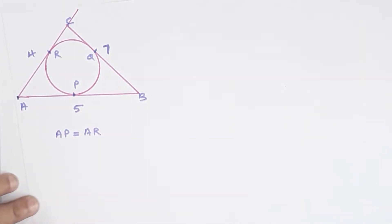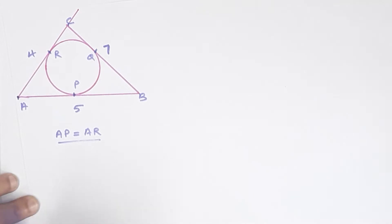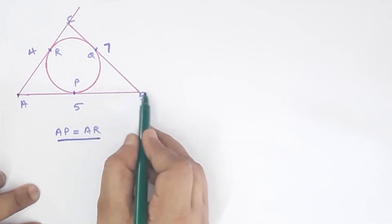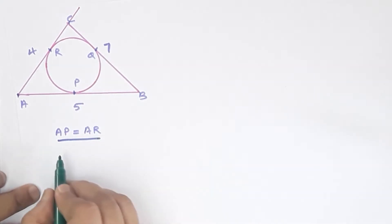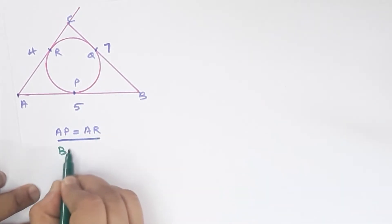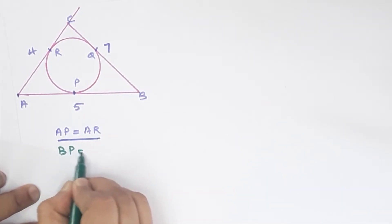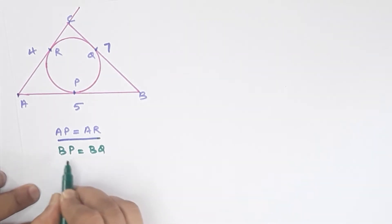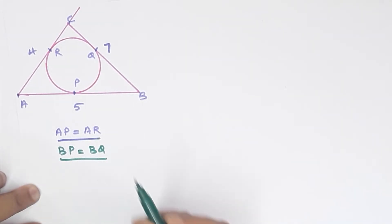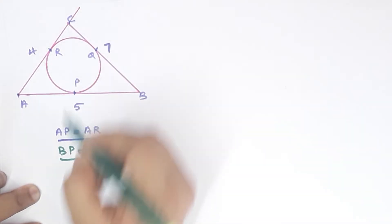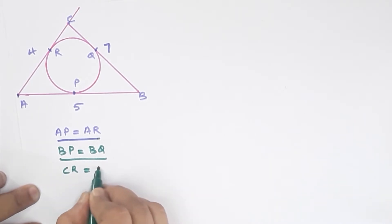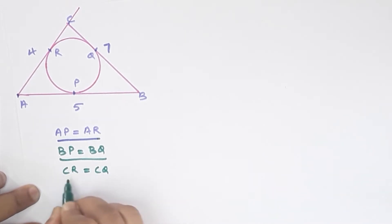From tangent equality: BP is equal to BQ. Also, CR is equal to CQ. These tangent length equalities hold for each vertex of the triangle as external points to the circle.